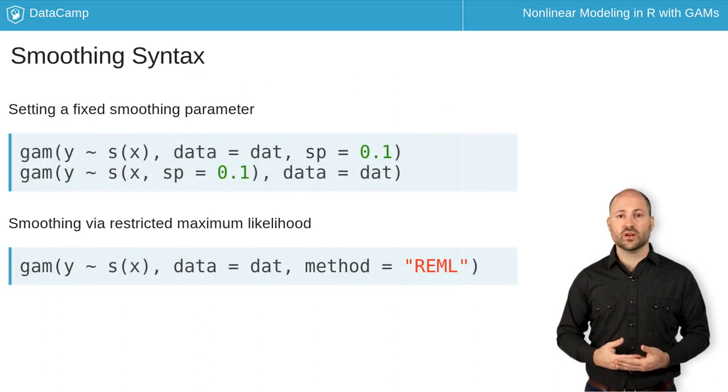Normally, when we fit a model with MGCV's GAM function, we let the package do the work of selecting a smoothing parameter. However, we can fix the smoothing parameter to a value of our choosing via the SP argument. The SP argument can be set for the whole model via an argument to the GAM function, as in the first line of code. We can also set the SP argument for a specific term in the GAM formula, as shown in the second line of code.